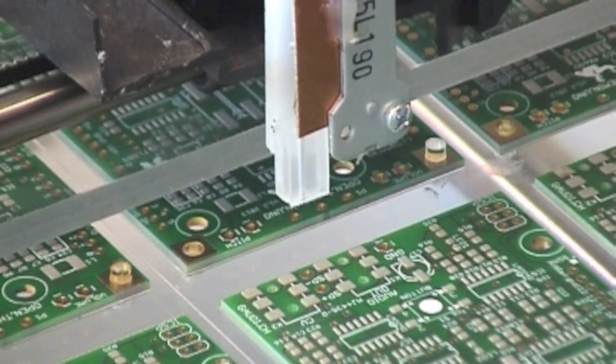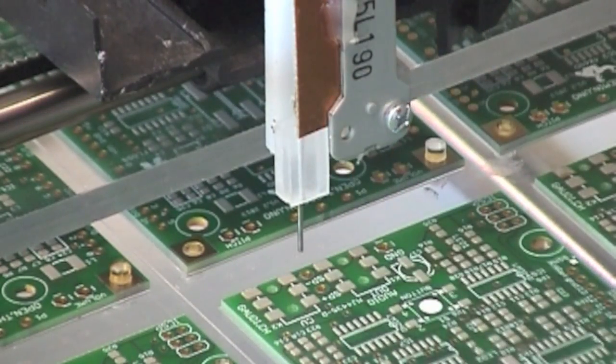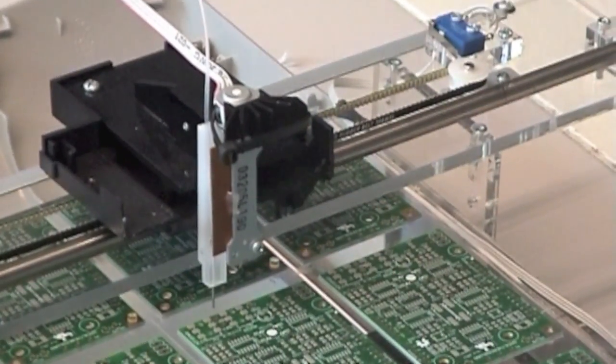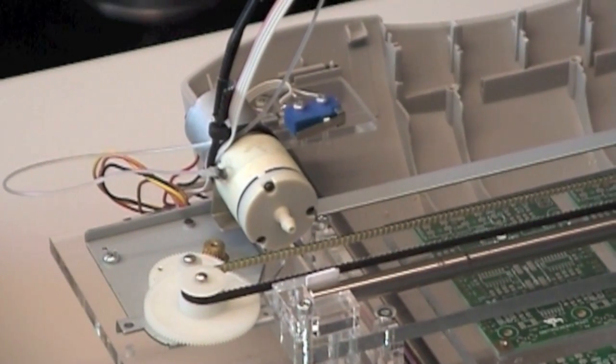The small SMD parts are picked up by a steel needle that you can see here on the tip moving up and down. The small needle is connected to a little vacuum pump that you see here.